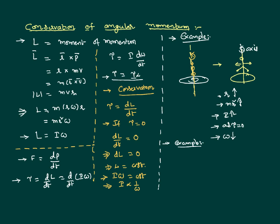Let us consider one more example to explain the law of conservation of angular momentum. Consider an acrobat on a springboard at the top of a swimming pool. He has to make somersaults in the air before he strikes the water. The winner is decided based on how many or how complex somersaults he makes in the air — not before leaving the springboard, and not after striking the water. He will jump from the springboard and, as you observe him, he actually folds his entire body like a ball.